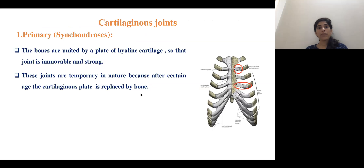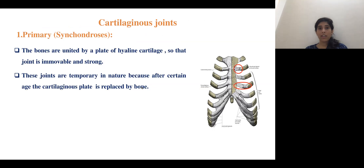The cartilaginous type of joint has two subtypes: primary and secondary. In the primary cartilaginous joint, bones are united by a plate of hyaline cartilage. The joint is immovable and strong. In certain joints, the cartilaginous plates are replaced by bone. Costochondral joints are an example of this type.